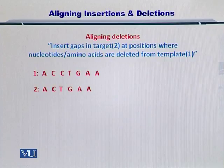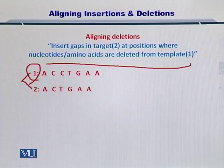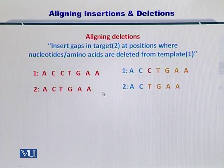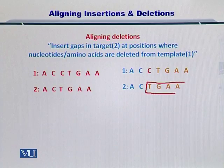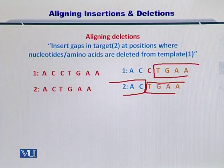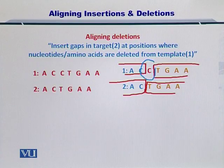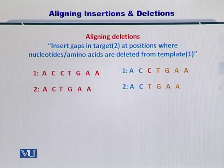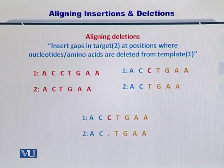We have two sequences again — one and two. Sequence one is the template and two is the target. If you examine the sequences, they match very nicely for these nucleotides, but there is a nucleotide C that does not exist in the target. To manage this, we simply insert a gap in the target.